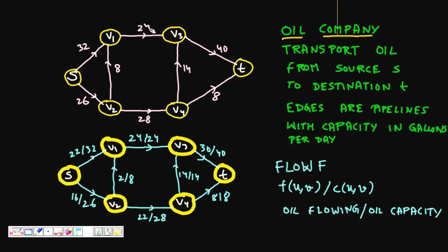For example, the pipeline between v1 and v3 can carry a maximum of 24 gallons per day, and the pipeline from v2 to v1 can carry only 8 gallons per day. So you have a capacity: from v1 to v3 you can carry a maximum of 24 gallons per day. Now you have to find how much flow to allow — from s to v1 the maximum capacity is 32 gallons per day.